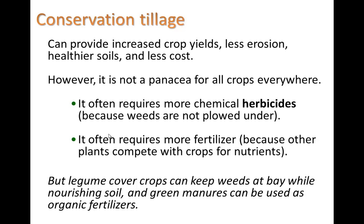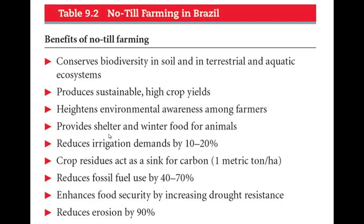Organic agriculture methods have been big in Brazil. Benefits include conserving biodiversity in the soil and in terrestrial and aquatic ecosystems, producing sustainable high crop yields, heightening environmental awareness among farmers, providing shelter and winter food for animals, reducing irrigation demands by 10 to 20%, and crop residues acting as a carbon sink — storing carbon as biomass rather than as CO2 in the atmosphere. It reduces fossil fuel use by 40 to 70%, enhances food security by increasing drought resistance, and reduces erosion by 90%. All these techniques in combination can give really big results. A textbook example from the Guatemalan Highlands showed a farm that increased yield from 1 ton per acre to 11 tons of food per acre between 1972 and 1994.